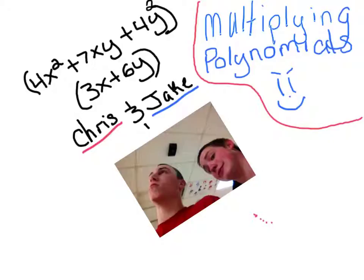Our problem is 4x to the second plus 7xy plus 4y to the second, close in parentheses, multiplied by 3x plus 6y.